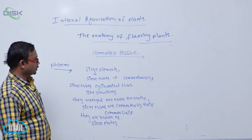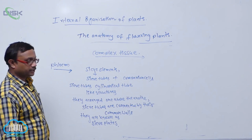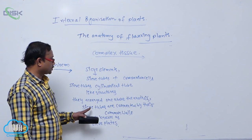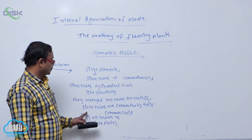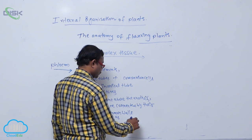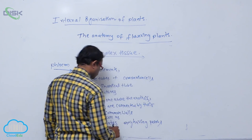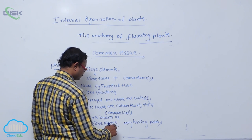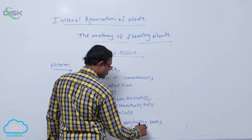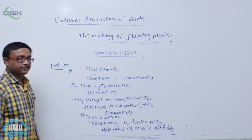Sieve tubes are cylindrical tube-like structures arranged one above the another, connected by their common walls known as sieve plates. These sieve plates have pores, and those pores are known as pit fields.